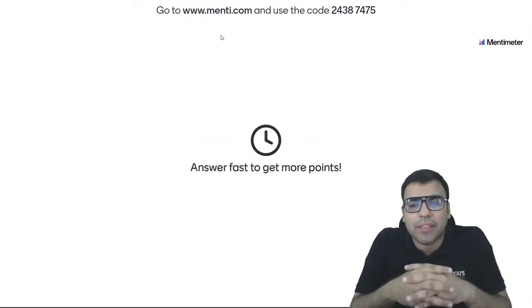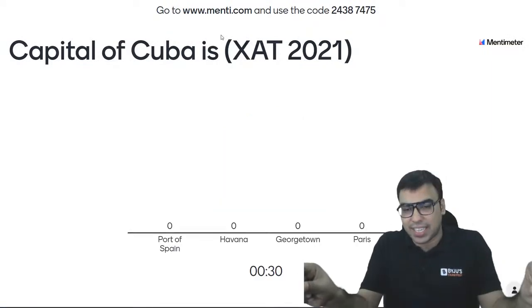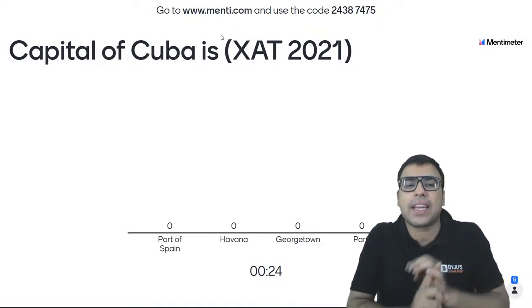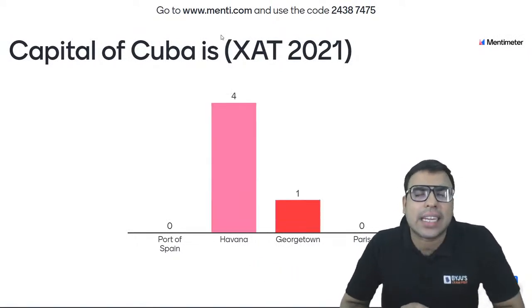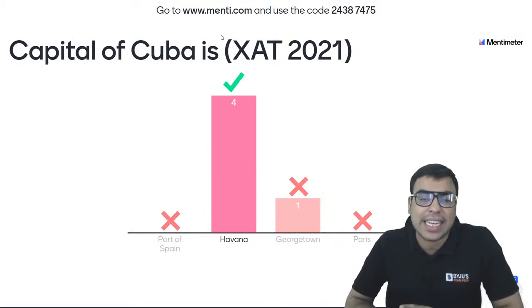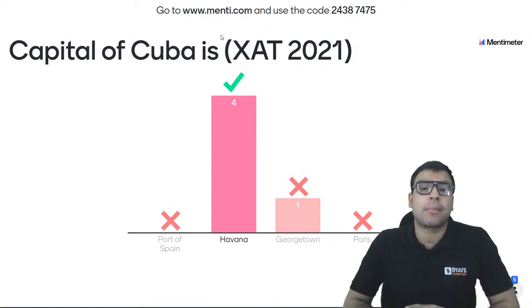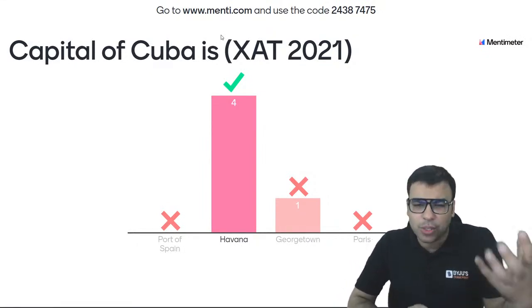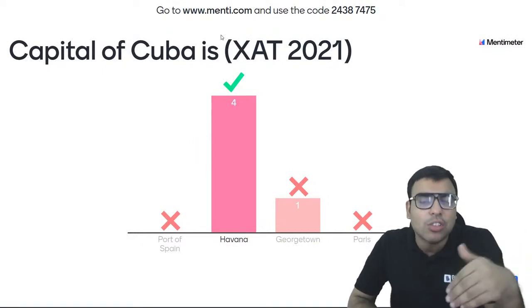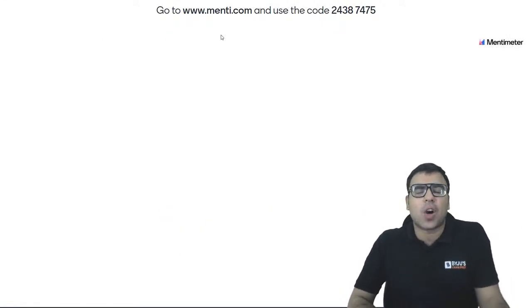Question number 21: what is the capital of Cuba? This was also asked in ZAT 2021 as a match-the-following. Options: Port of Spain, Havana, Georgetown, Paris. Cuba is a very famous Latin American country located just south of the USA — south of Florida. The right answer is B — Havana is the capital of Cuba. Please remember it.